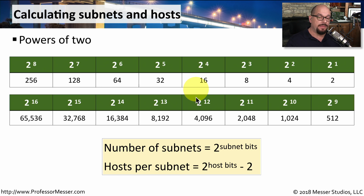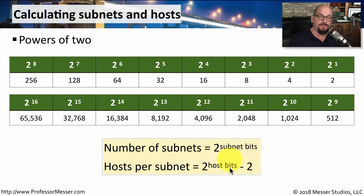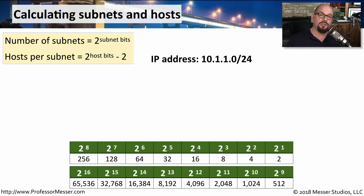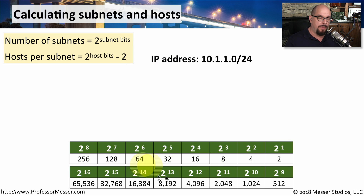To use this chart, we look at the number of subnet bits we've borrowed and perform 2 to that value to determine the total number of subnets available. Then to determine the number of hosts available per subnet, we use 2 to the host bits power and subtract two from that — one for the subnet address and one for the broadcast address. Everything left is the available number of hosts on each individual subnet. We have our number of subnets formula (2 to the subnet bits) and hosts per subnet (2 to the host bits minus 2), along with our powers of two chart at the bottom.